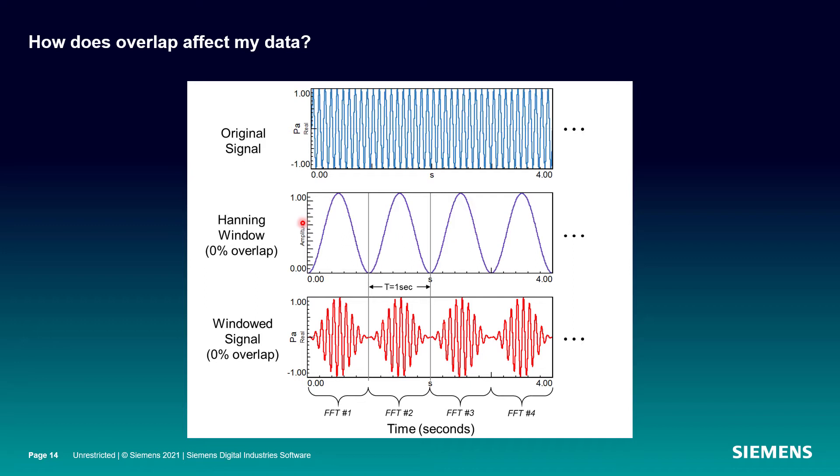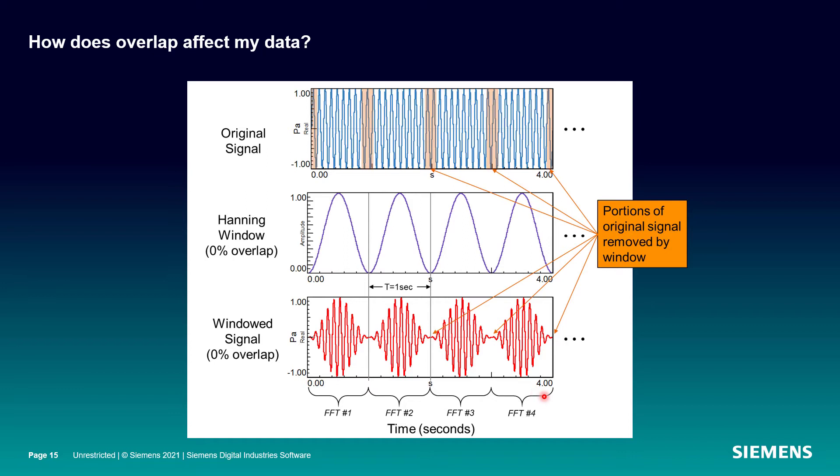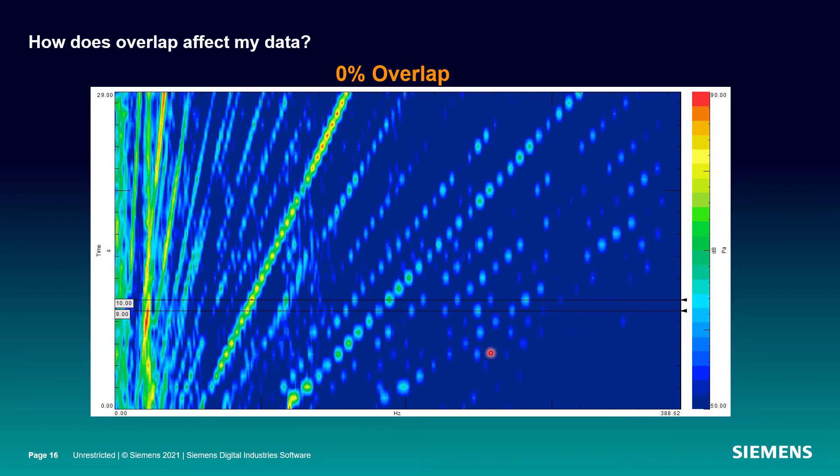So here I have four averages. I've chosen a one second capital T or a one Hertz Delta F, and I've got 0% overlap. And so my original signals here, my four Hanning windows butted right up against each other are here. And then I end up with this final signal down here with my four FFTs shown. And you see, there are portions of the original signal that are not contained in this signal that we're actually using to average or calculate multiple FFTs.